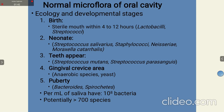In the neonate, Streptococcus salivarius, Staphylococci, Neisseria, and Moraxella catarrhalis are present. When teeth appear in the infant, Streptococcus mutans and Streptococcus parasanguinis are present. When gums come in, anaerobic species and yeast like Candida start appearing. During puberty, Bacteroides and Spirochetes are present, including Treponema. In per ml of saliva, there are almost 10⁸ bacteria and potentially greater than 700 species.